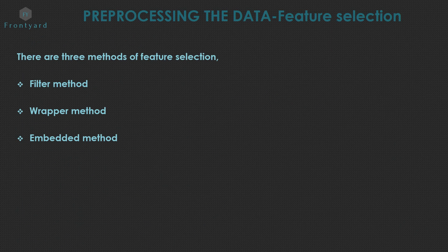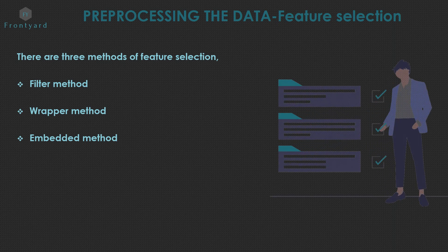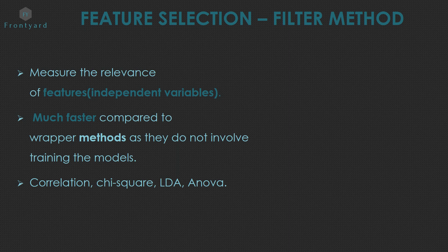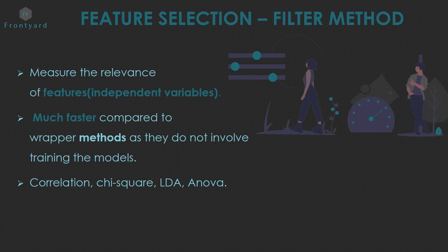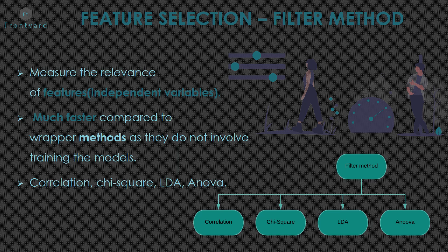There are three methods of feature selection. First is filter method. Next, wrapper method and embedded method. Today's video is about filter method. It measures the relevance of features that is independent variables. It is much faster compared to wrapper methods as they do not involve training the models. Filter method has four divisions: correlation, chi-square, LDA, and ANOVA.